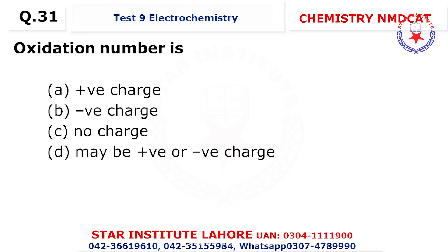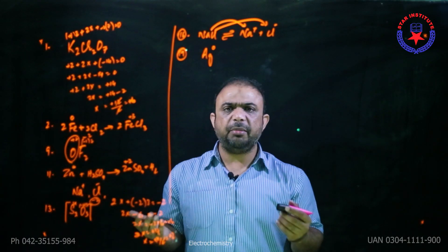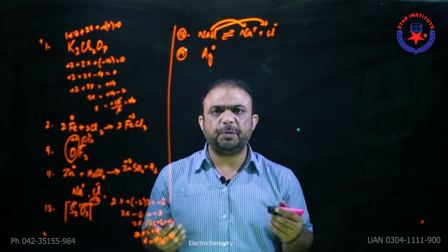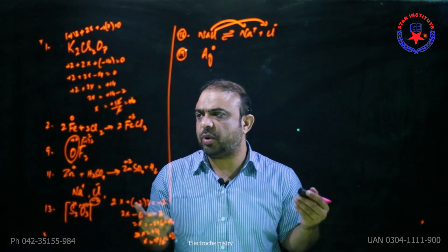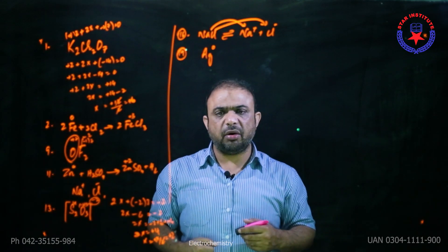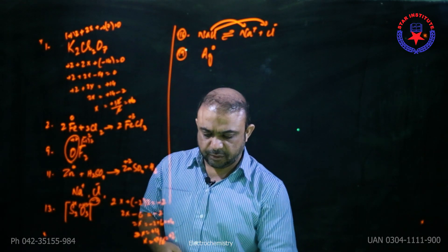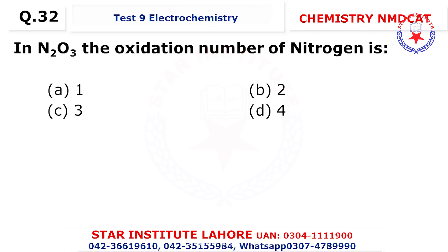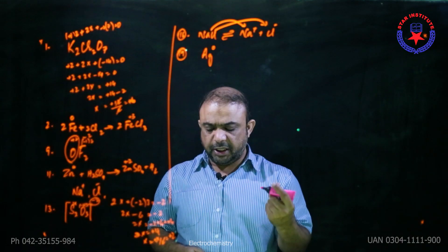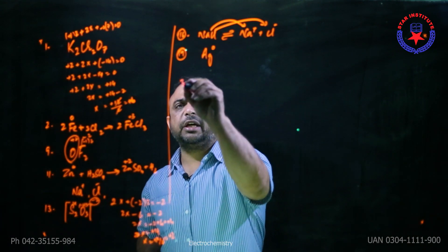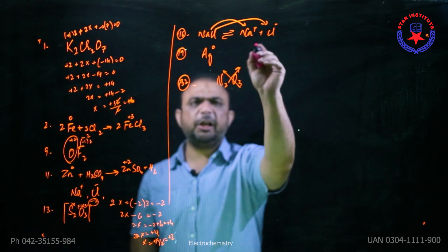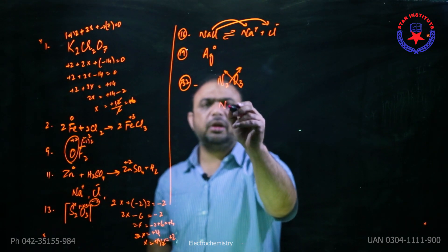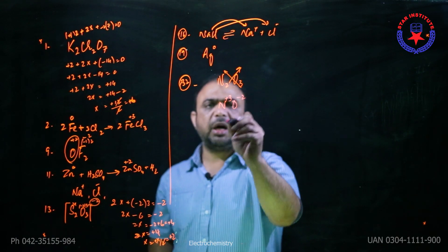Question 31: the oxidation number may be positive or negative. It is basically the apparent positive or negative charge that an atom would have on it — oxygen is minus 2, and in this example it is positive 2, so we can say it may be positive or negative. Question 32: in N₂O₃, the oxidation number of nitrogen — using the cross-multiplication method — nitrogen should be plus 3 and oxygen should be minus 2.